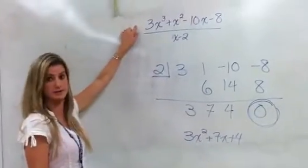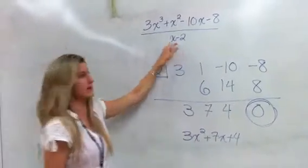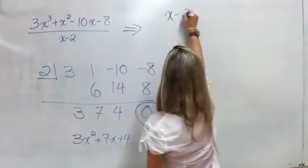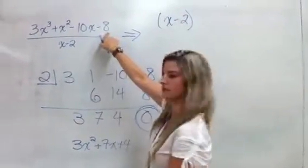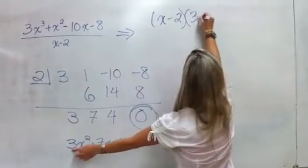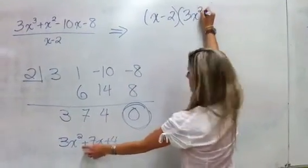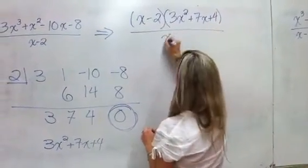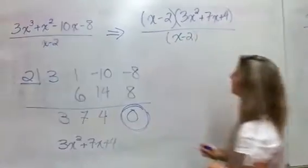So if I'm going to rewrite this, after having factored out the x minus 2, I would end up with x minus 2, since I told you that was a factor, we were factoring that out of this numerator, times 3x squared plus 7x plus 4. And then of course over x minus 2.